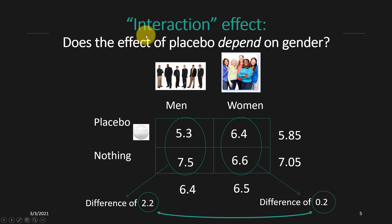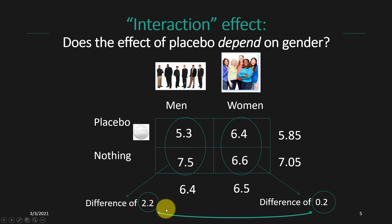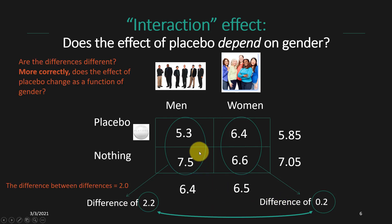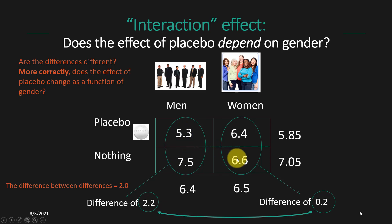To ask about the interaction, we want to know: does the effect of the placebo depend on gender? The effect — placebo versus nothing — can be represented as a difference. The difference between taking the placebo versus nothing for men was 2.2, whereas the difference for women was 0.2. We can then ask: are these differences different? Because if these differences were the same, that would suggest the effect of the placebo is the same in both groups.